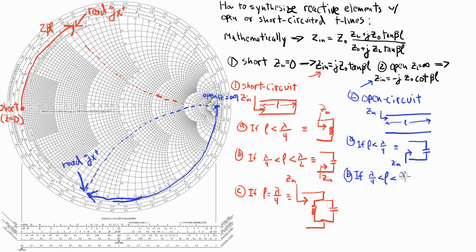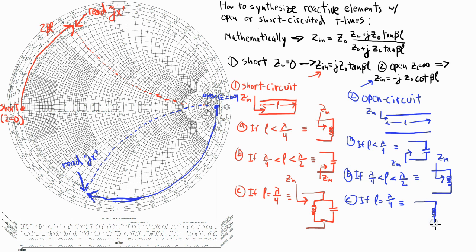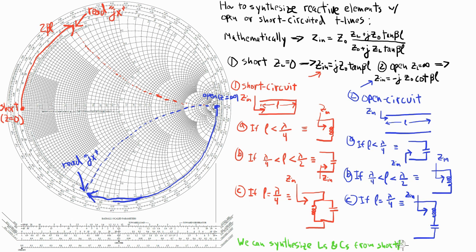If my length is greater than a quarter wavelength but less than half a wavelength, then I will be on the top half of the Smith chart and synthesizing an inductor, just like before. And finally, if my length is nearly equal to a quarter wavelength, then I will be synthesizing a series LC resonator. I know that the impedance of a series LC resonator that's grounded on one end is equal to a short at the resonant frequency.